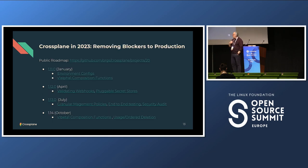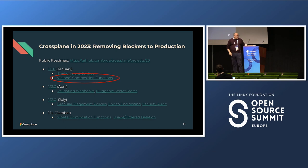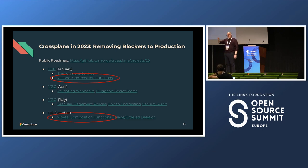Our focus this year at Upbound and in the Crossplane community has been talking to customers, understanding blockers and pain points. We have quarterly releases with key features — all links go to design documentation. The first alpha release of functions came out in January, after about six months of working on the proposal. The beta is coming in 1.14, and it's actually different from the alpha — the new design runs as a deployment outside of Crossplane, which is much better.